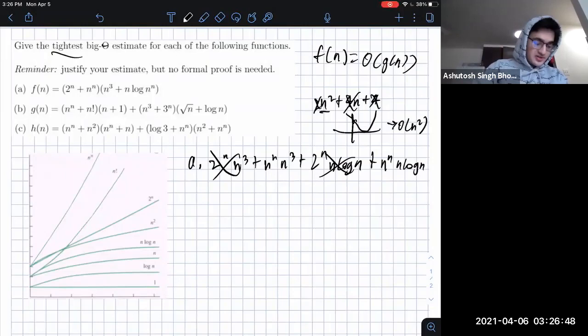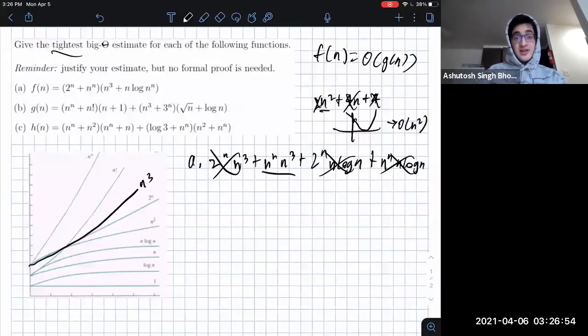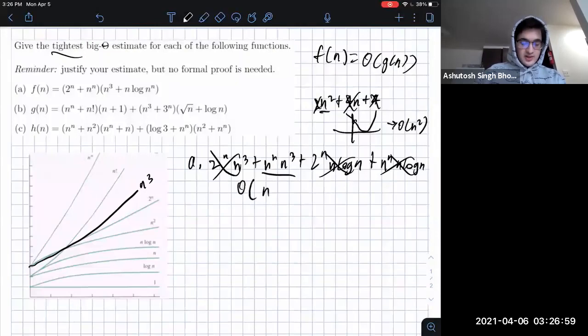And then n log n versus n cubed. n cubed grows faster than n log n. I think it's about here-ish. So n to the n times n cubed would be the winning term here. So it would be O of n to the n n cubed. Or if you wanted to, you could say O to the n plus 3.